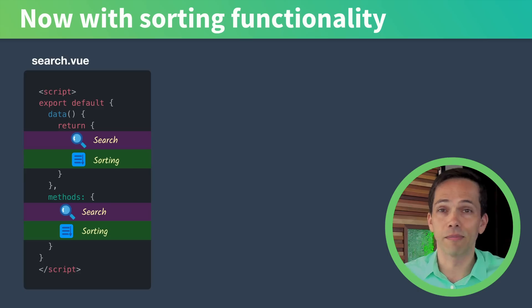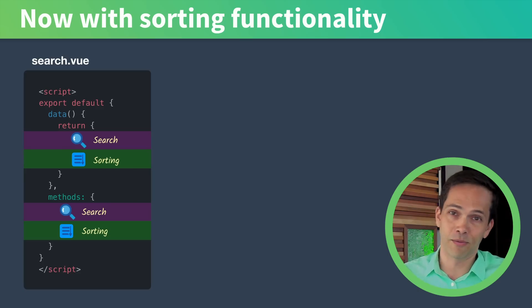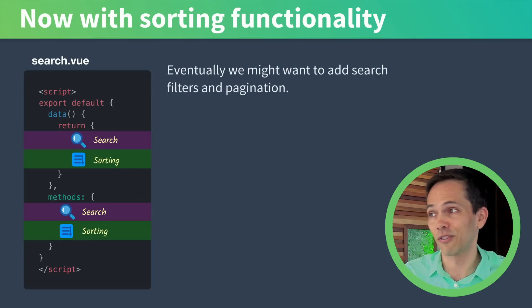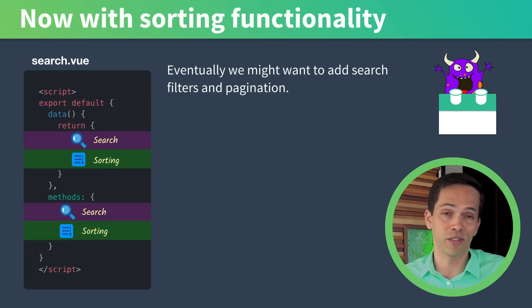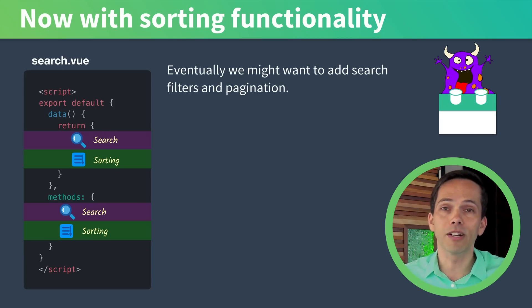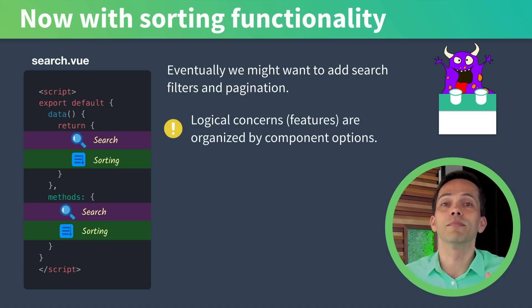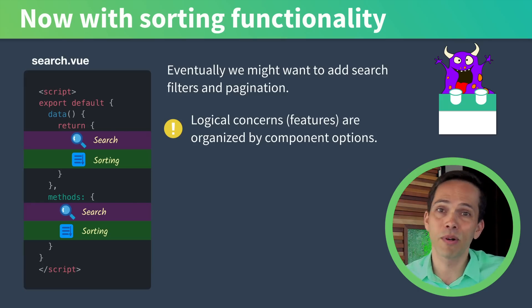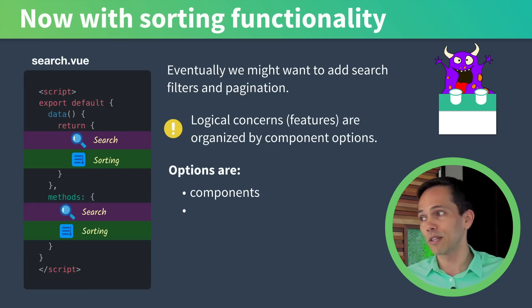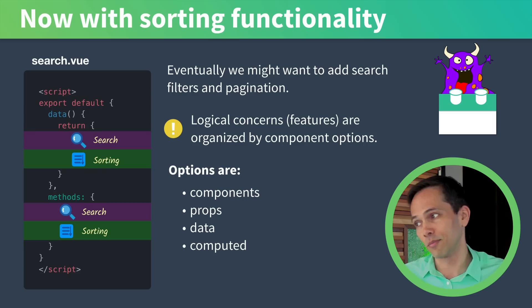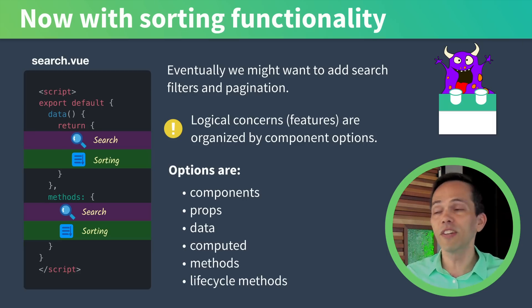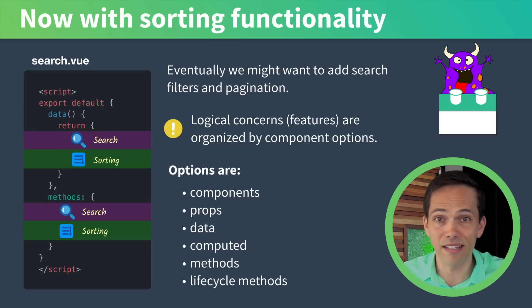Our code for each feature is split up between two options. Things aren't too messy but they would be if we added additional functionality for say search filters and pagination. The problem here is that logical concerns or features are organized by component options, and there are a lot of component options in Vue — things like components, props, data, computed, methods, and lifecycle. Our feature code might be divided up into six different places.